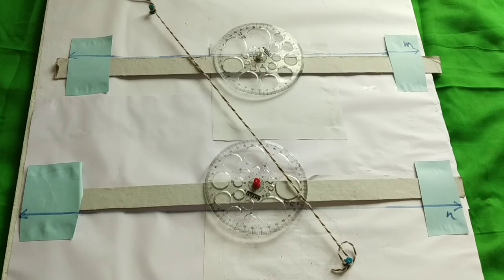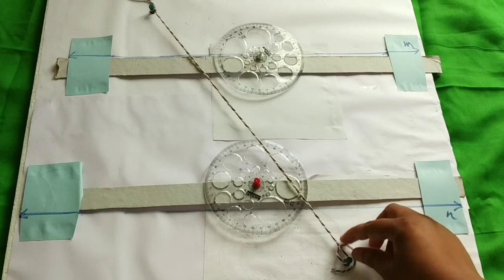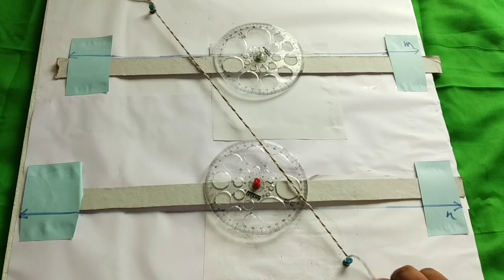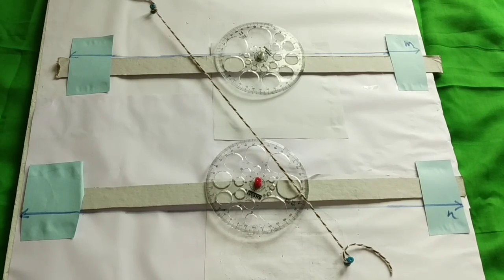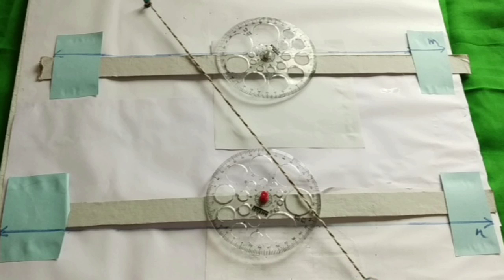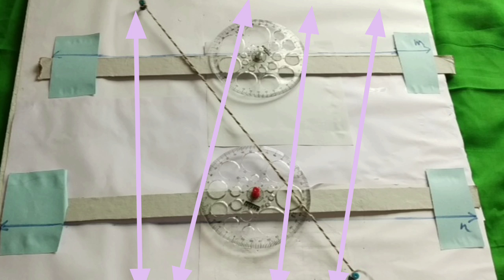Transversal line can be formed from any point. That is why we have kept it flexible. We can put thumb pins at any point and form the transversal line.